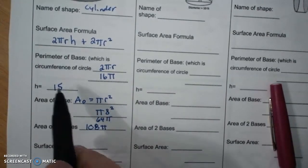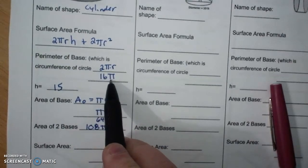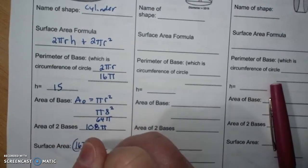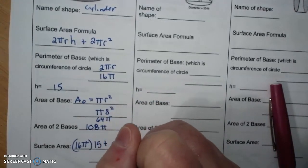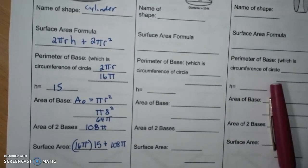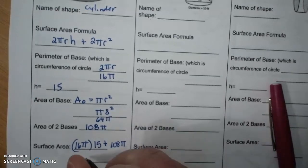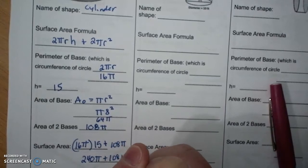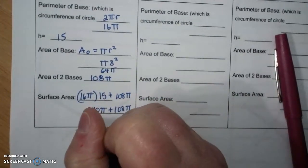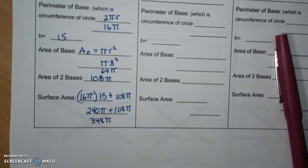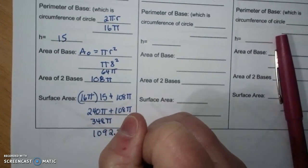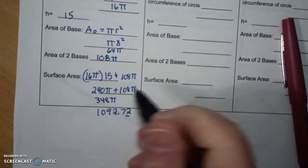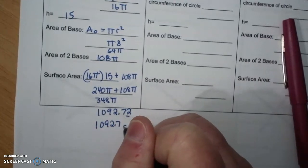So surface area is 2πrh which is 16π times 15 plus 2πr squared but that's two bases which is 108π. So 15 times 16 is 240π plus 108π and that is 348π. And when I multiply 348 times 3.14 I get 1092.72, round to the nearest tenth underline 1092.7 centimeters squared.